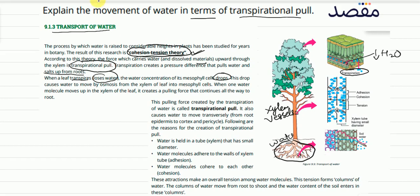This drop causes water to move by osmosis from the xylem into the leaf's mesophyll cells. If the concentration of mesophyll cells is reduced, then the xylem will send more water to the mesophyll cells to balance the concentration gradient. Water always moves from high to low concentration. As the water concentration drops in mesophyll cells, xylem sends more water upward.